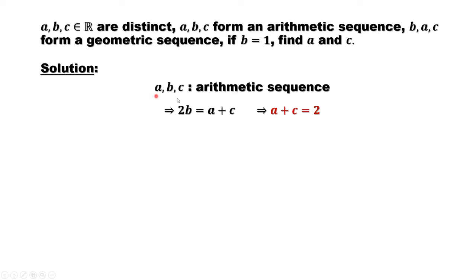If A, B, C form an arithmetic sequence, we imply 2B equals A plus C. What does this mean? There is a common difference. A actually equals B minus D, C equals B plus D. B is the average, so 2B equals A plus C. B is given as B equals 1, so we imply A plus C equals 2.